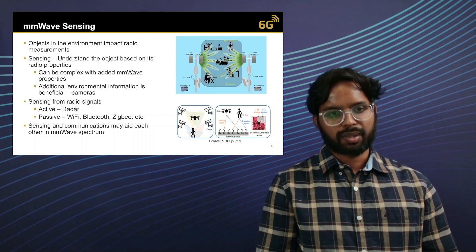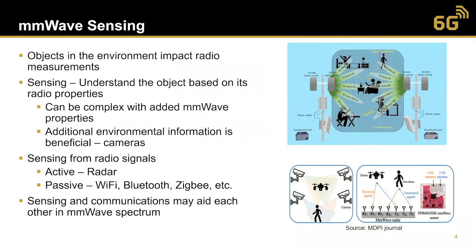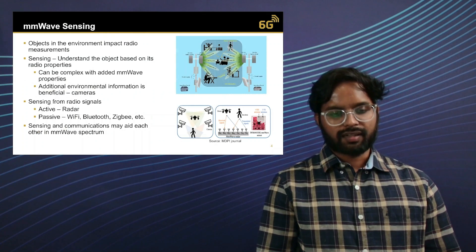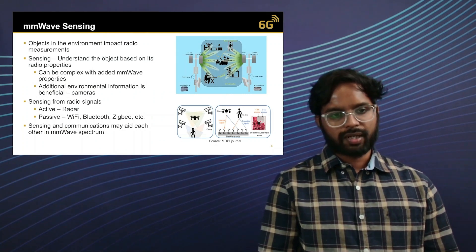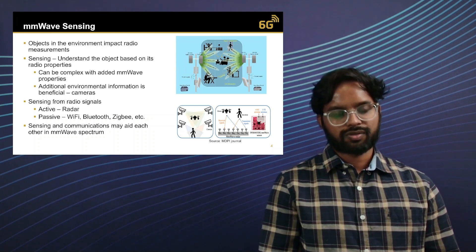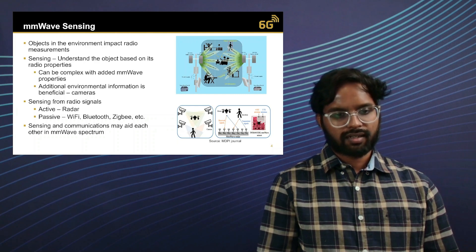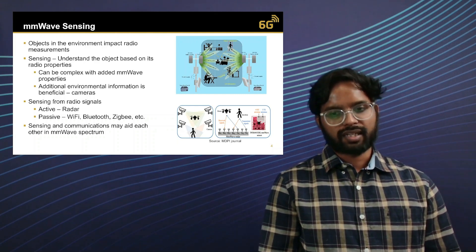From the sensing point of view, it is useful to understand whether an object is static or dynamic and what kind of activity is happening, based on its radio properties. However, this can be quite complex especially with millimeter wave properties such as line-of-sight, non-line-of-sight, interference effects, and adverse channel conditions. Having extra environmental information — such as spatial information from cameras — can be highly beneficial, since radio signals are generally temporal in nature. Sensing using radio signals can be active, as in radar, or passive, as with Wi-Fi, Bluetooth, or Zigbee. Based on these properties, sensing and communication phenomena in the millimeter wave spectrum may aid each other.